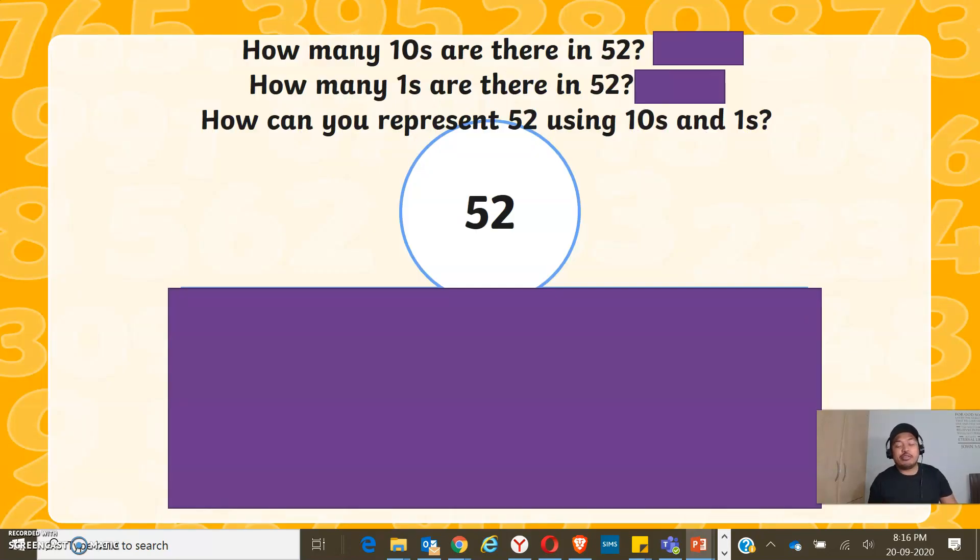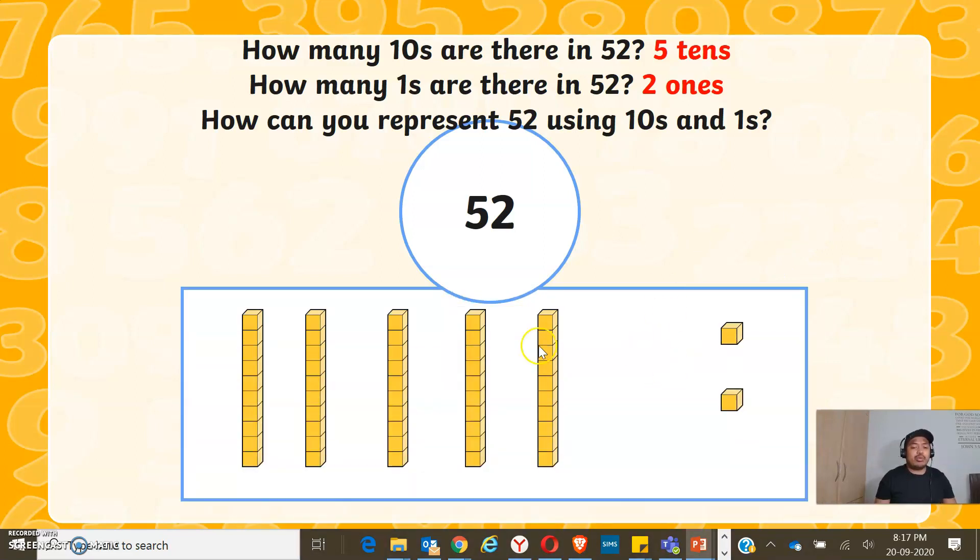How many tens are there in 52? How many ones are there in 52? How can you represent 52 using tens and ones? So there are 5 tens in 52 and 2 ones. To represent 52, we may use the counters or the bars. We can use the 10 bars counter. So 5 of it and 2 single counters, which made up 52.